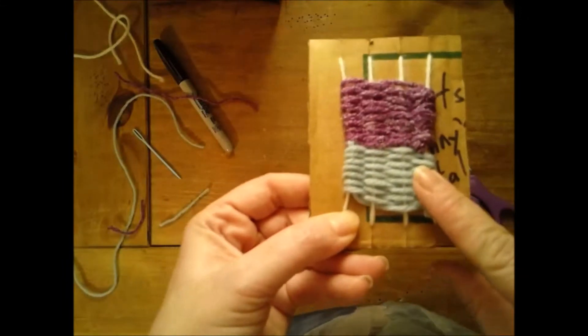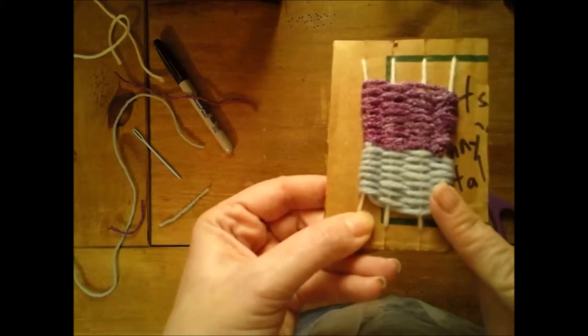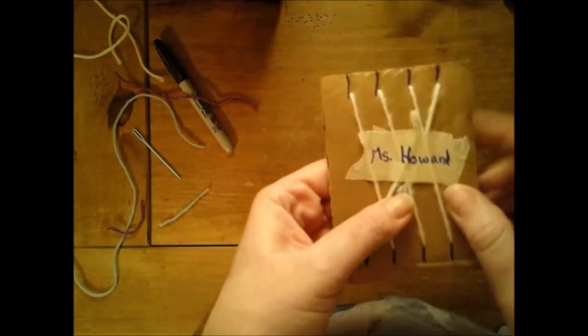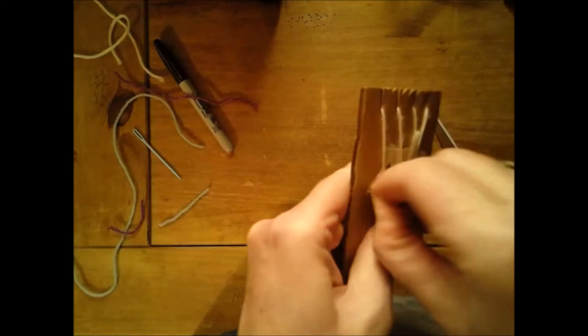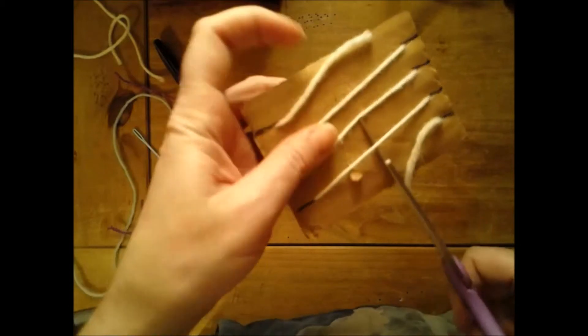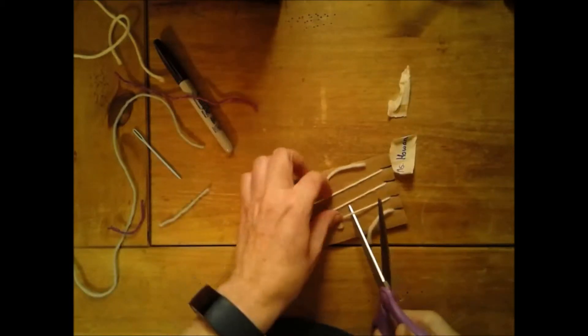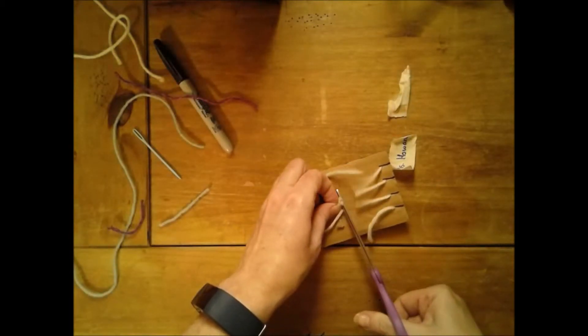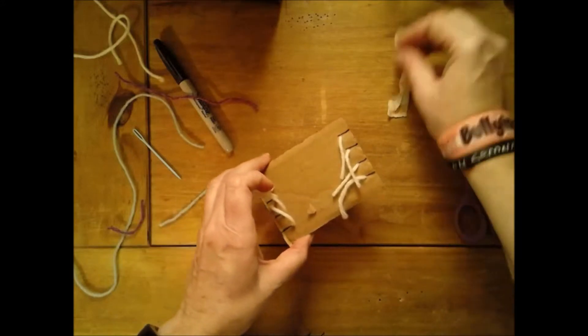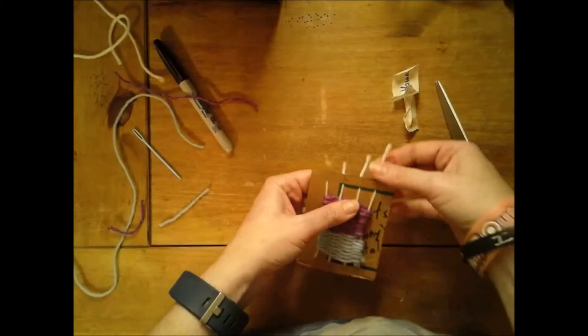I'm ready to take this off of my loom. So to do that, I'm going to turn it over, I'm going to take off the tape, and I'm going to slide my scissors in the middle right underneath them and I'm going to cut these strings. Now I can turn it over and take two off at a time.